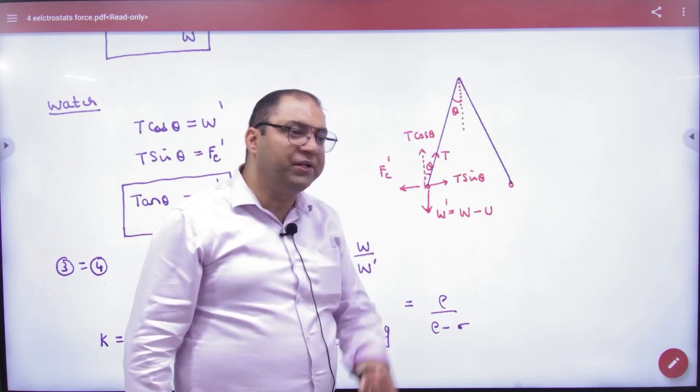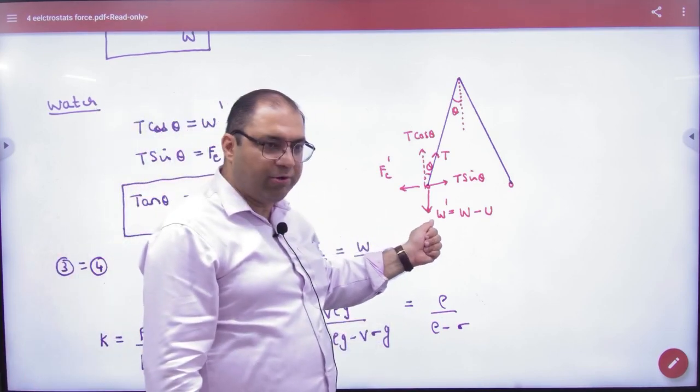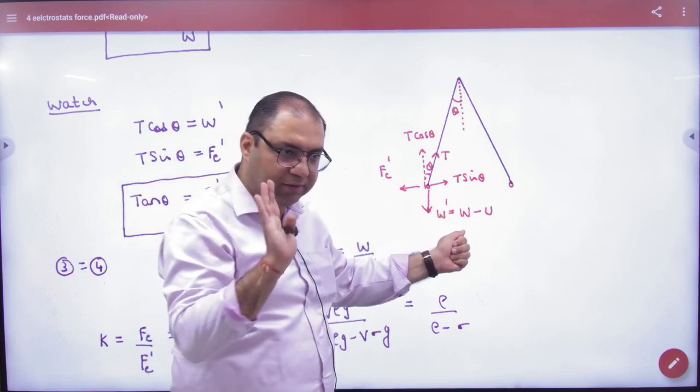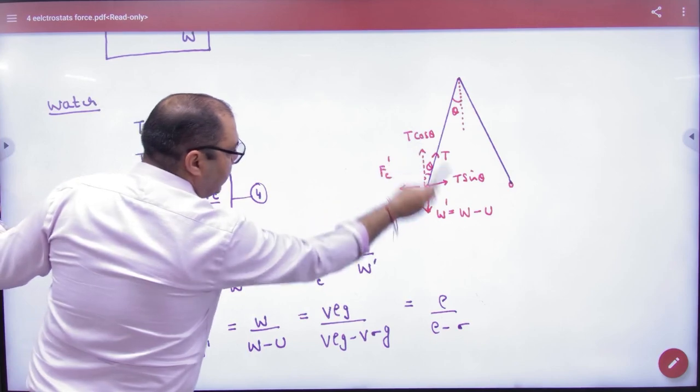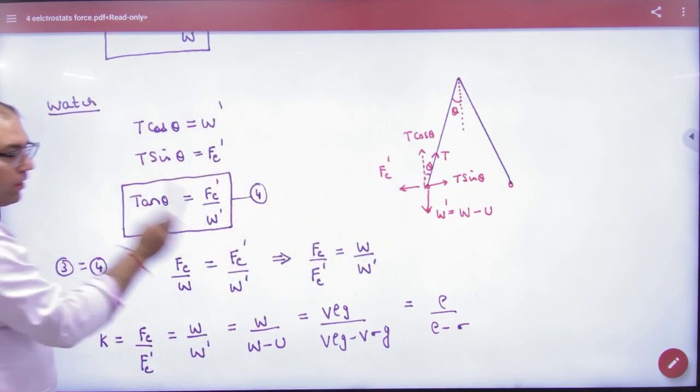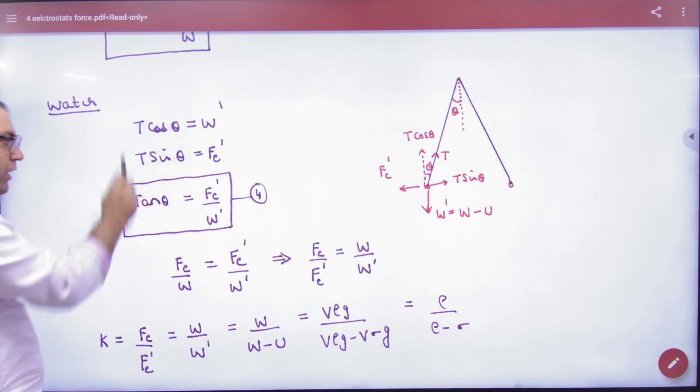The electrostatic force will change, and the weight will change because of the water. There will be thrust. If the weight in water has upthrust, then the weight will be less: W dash equals W minus upthrust. The equilibrium is also given. So Tcos theta equals W dash and Tsin theta equals Fc dash. Then divide it and take out tan theta. The point is important: the angle has not changed.